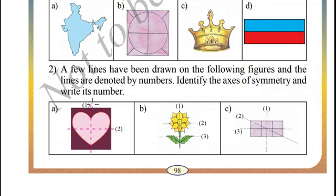When we fold this figure horizontally, this part doesn't match with this part. So 2 cannot be an axis of symmetry.